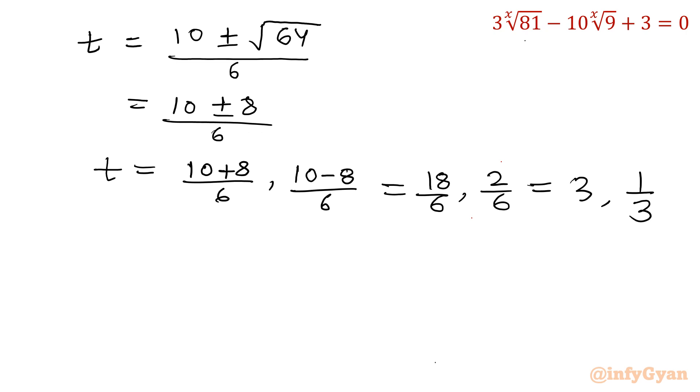So this is t value. What was our substitution? 9 power 1 over x was our t. So let me write here: t equal to 3 and t equal to 1 over 3. I will put back the value of t. So 9 power 1 over x is equal to 3, and 9 power 1 over x is equal to 1 by 3.